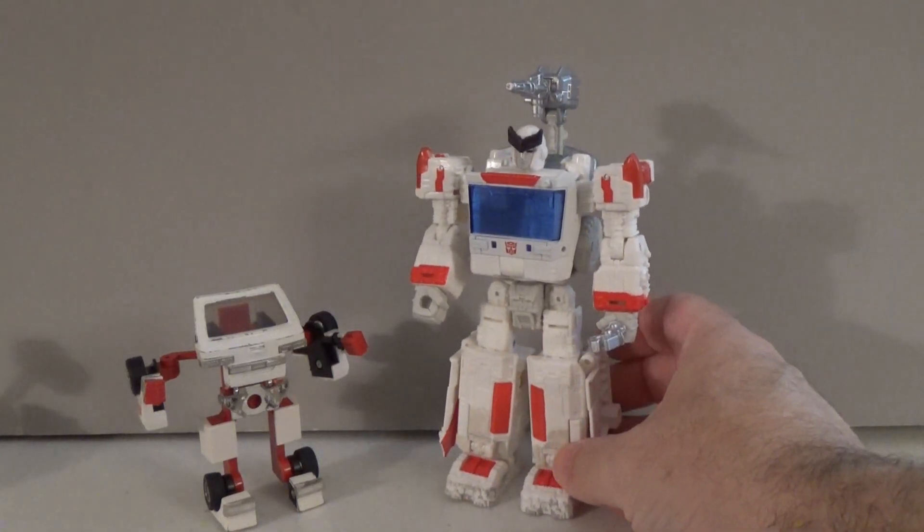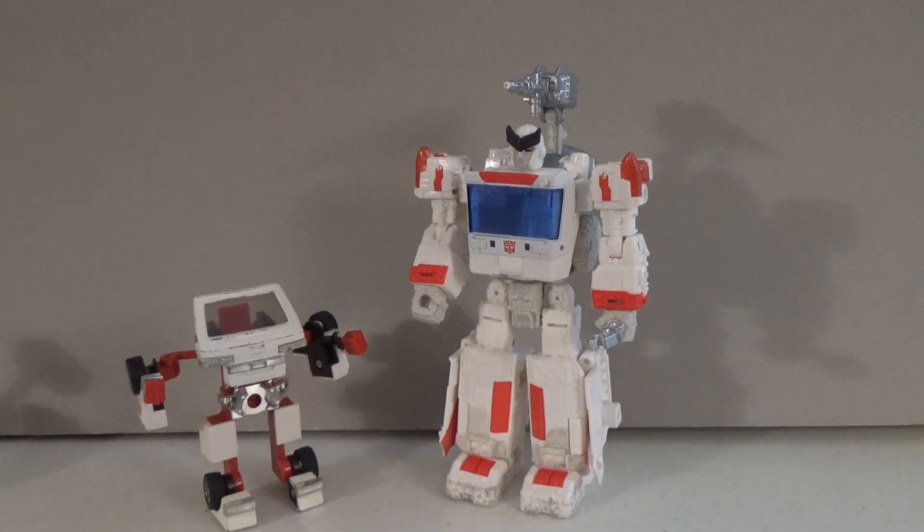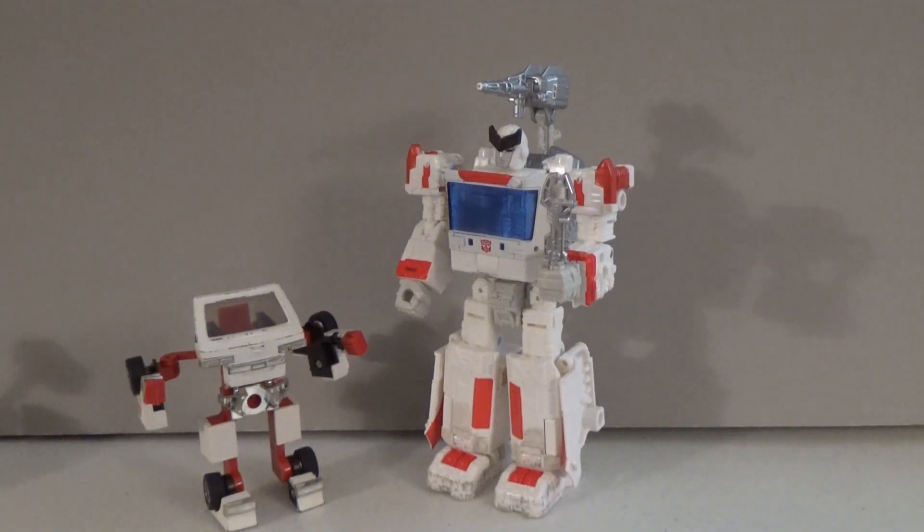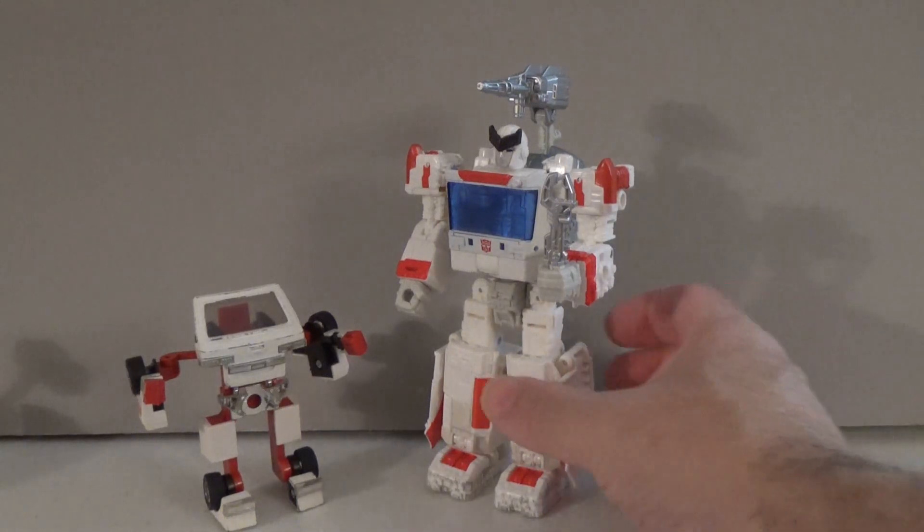Before we move on to transforming Ratchet, I'd like to show off some modern Ratchets that are in my collection. So that all of you can see how the character has been done in newer forms. Like right here, this is the Siege version of Ratchet. Again, it was redone to also serve as Ironhide. But they gave Ratchet some more appropriate accessories. Like in his hand here, he is basically carrying a Cybertronian type wrench, which goes well with him being the team's medic.